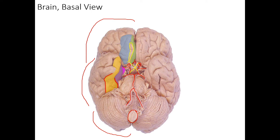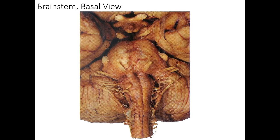Now let's take this view and magnify it a little bit so we can see the brainstem. Here is the basal view of the brainstem. This is where all of the cranial nerves are branching — where they come out of the brainstem to head into whichever foramen or foramina they travel through to go to the periphery. In this view we can see every single one of them, although some are a little bit more difficult than others.